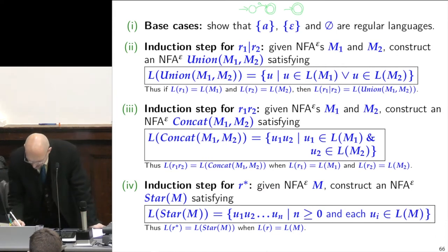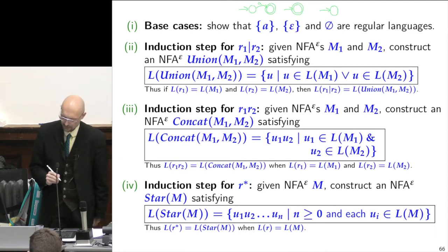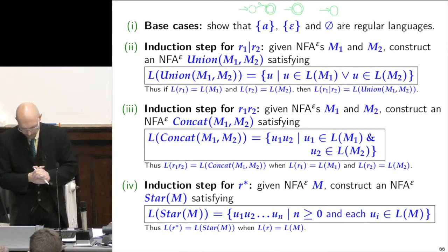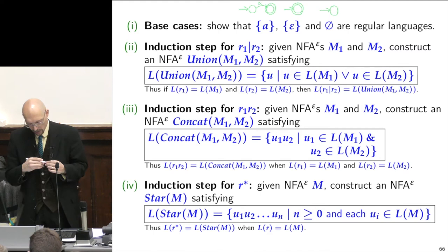If you want a machine that doesn't recognize any input, then you're in the start state. Nothing's accepting. You don't have any arcs. That's it. That's all done. So that was easy.